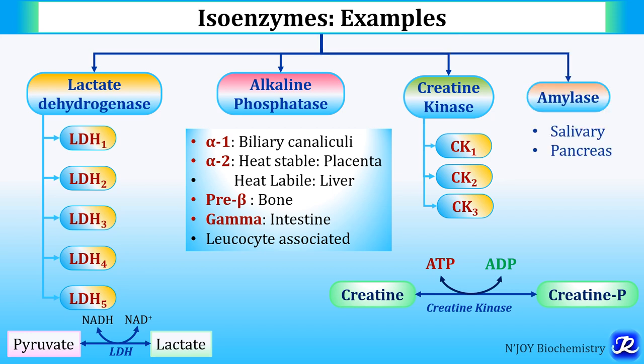Amylase has 2 isoenzymes: salivary amylase and pancreatic amylase. Another example is hexokinase and glucokinase. So these are the various examples of isoenzymes.